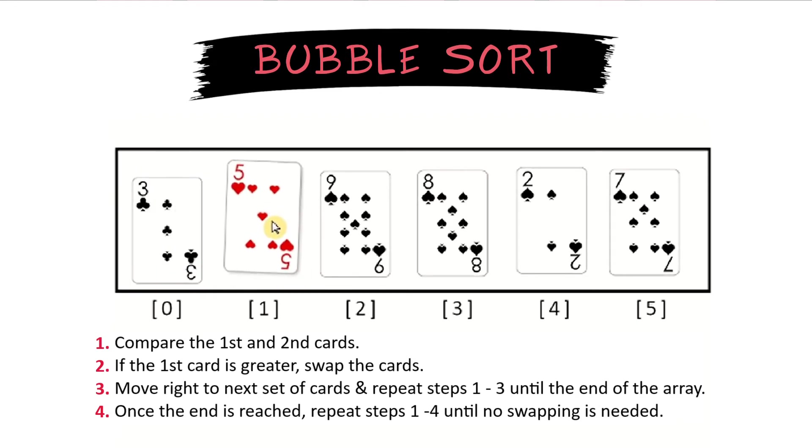Next, we move to the next pair, which is 5 and 9. We compare them. Since 5 is less than 9, there is no reason to swap.